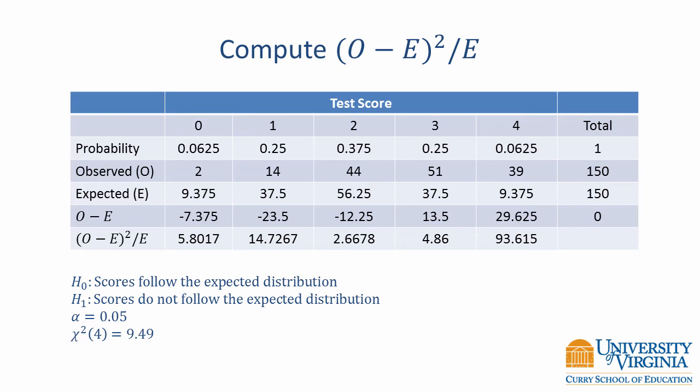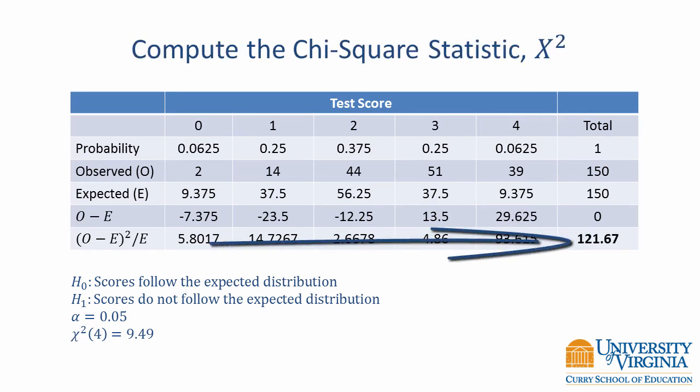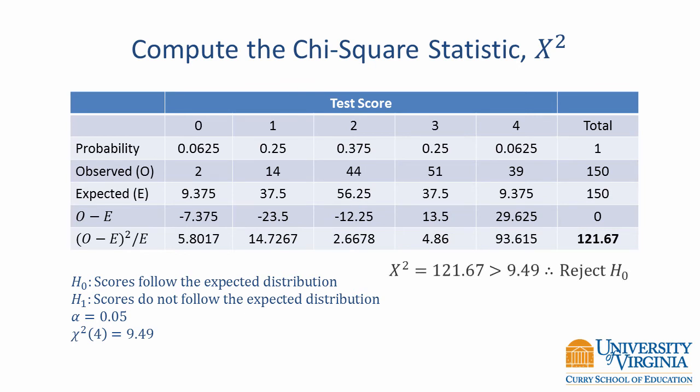Now we have all of the information we need to compute our chi-square statistic. We just add the values in the last row to get our chi-square value of 121.67. Because 121.67 is greater than our critical value of 9.49, we reject the null hypothesis and conclude that scores do not follow the expected distribution.